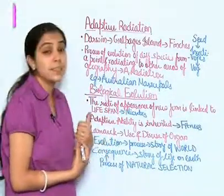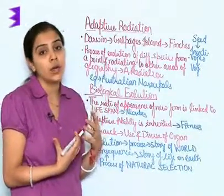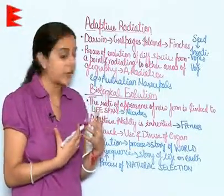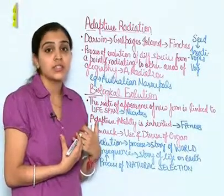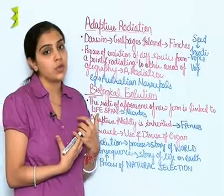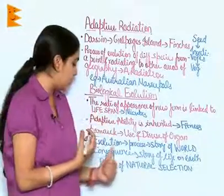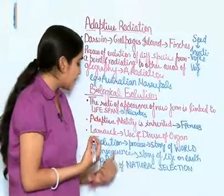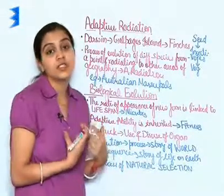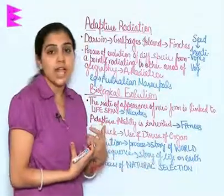Evolution can be understood as both a process and a consequence. If we talk about how a word is formed and what changes occurred, evolution is a process. But if we talk about the story of life on Earth, evolution is a consequence — specifically, the consequence of the process of natural selection, which led to the presence of life on Earth.